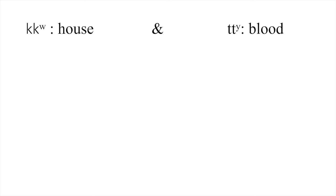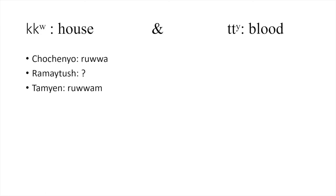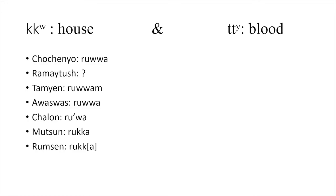Let's look at the word for 'house.' Chochenyo is 'ruwa,' Tamien has 'ruwam,' Awaswas is 'ruwa,' and Chalon is also 'ruwa' — though Chalon uses a glottal stop rather than a doubled consonant. These are the northern Ohlone languages, and as you can see they all take the W. Now for the southern languages: Mutsun is 'ruka' and Rumsen is 'ruk.' That shows very clearly how northern and southern Ohlone differ. Karkin was not included because the word for 'house' in Karkin is undocumented.